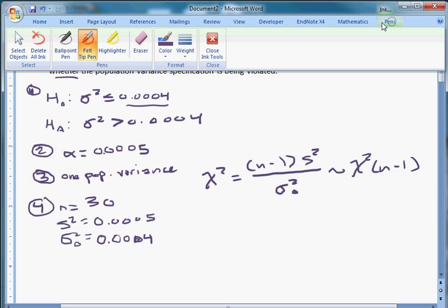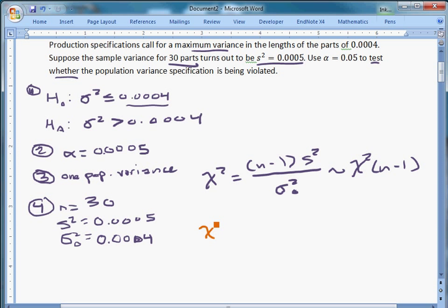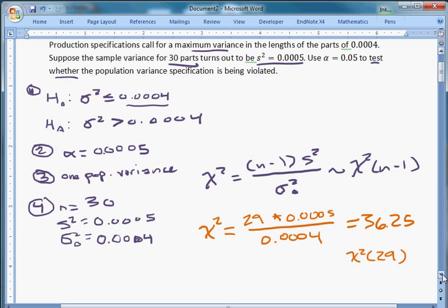Now that we have all this stuff we can calculate. So plugging this stuff in, you get 30 minus 1 is 29, and s-squared is, that's a multiplication, 0.0005, all over 0.0004. And that's going to be 36.25. That should look really big if you've been following along with Z-statistics and T-statistics. Chi-squareds, they get pretty big sometimes. Chi-squared numbers are sometimes kind of big relative to those other ones. Under the null, we have 29 degrees of freedom. And that's step four.